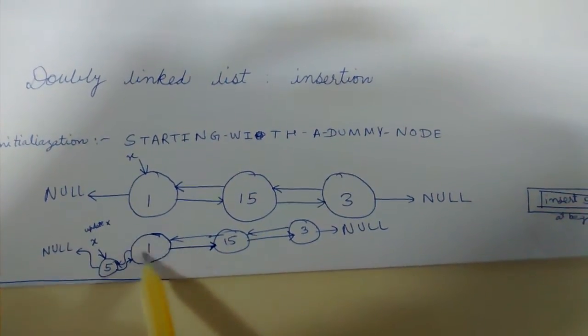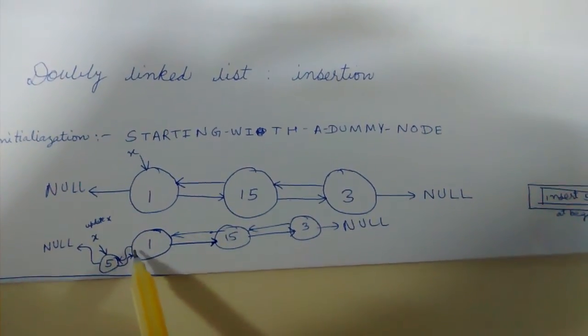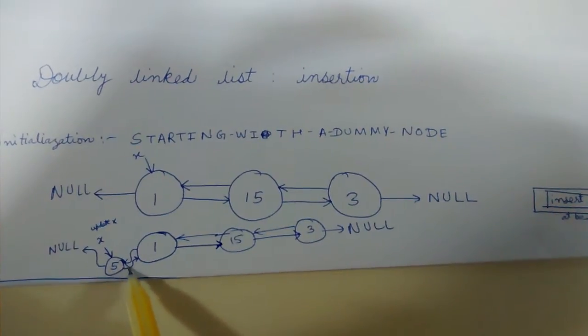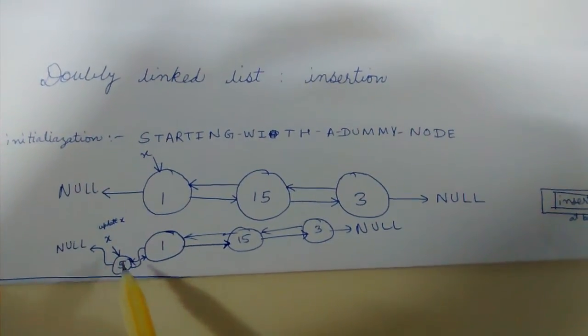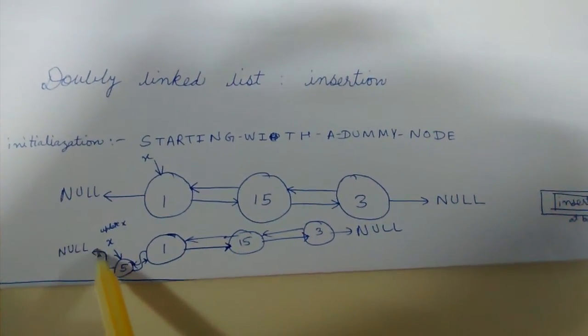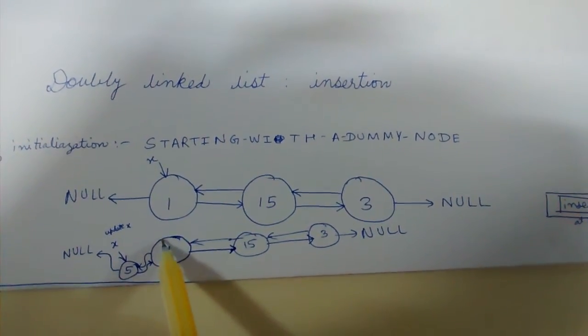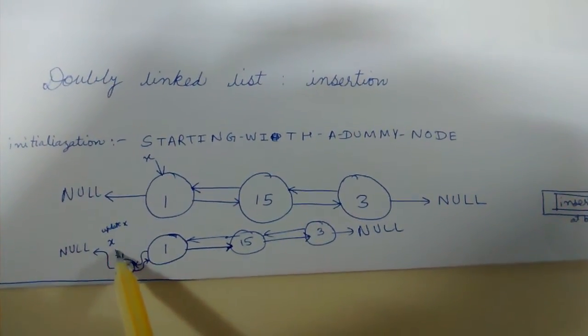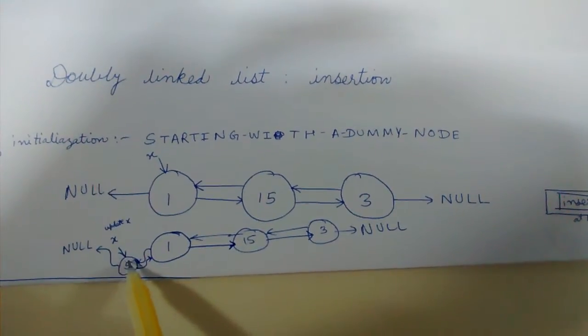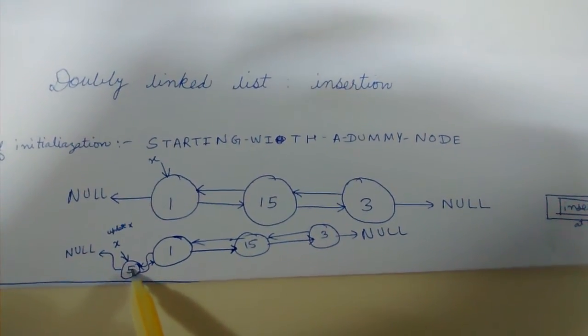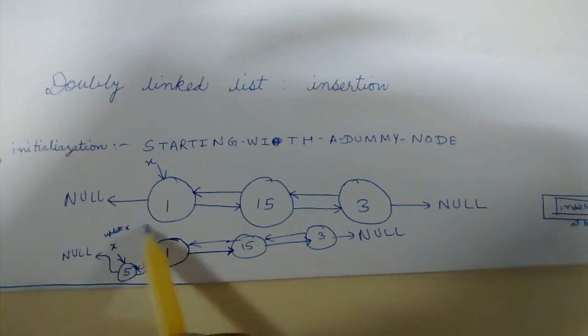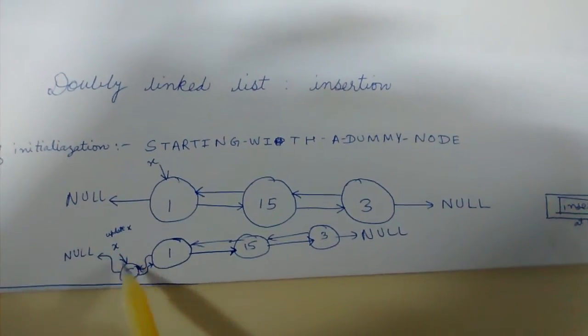And five's backward pointer will point to null. And also last thing but not the least, X will be updated to five because now this is the beginning of the list. This is update X. So this way we can insert a new node.